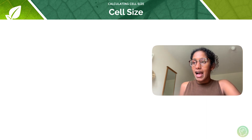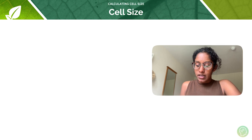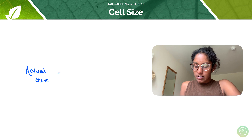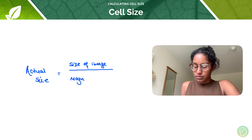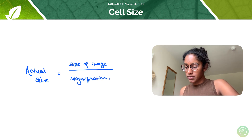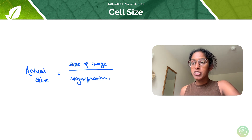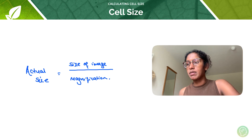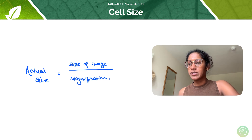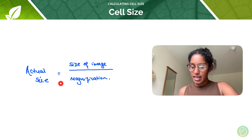Another way to calculate the actual size of cells is by using the simple formula: actual size equals the size of the image divided by magnification. That is a really simple formula to use. In the exam, you may be given an image of a cell along with the size of the image and the magnification at which it was taken, and you just put those numbers into the formula to easily find the actual size of the cell.